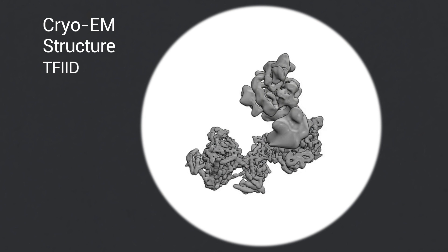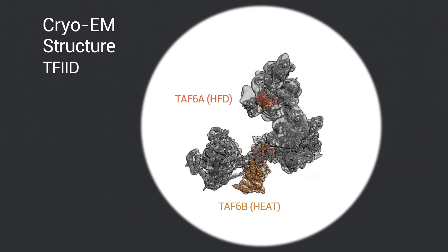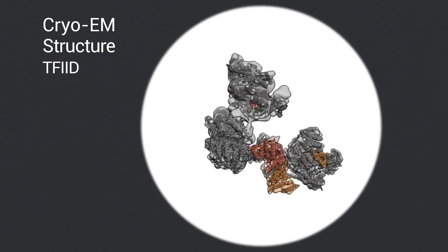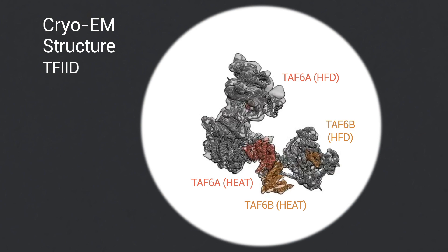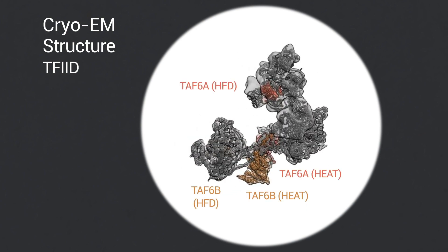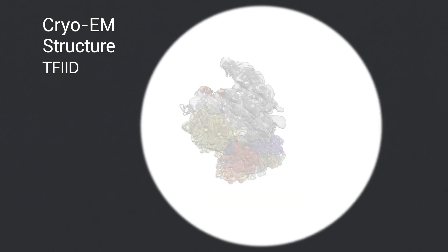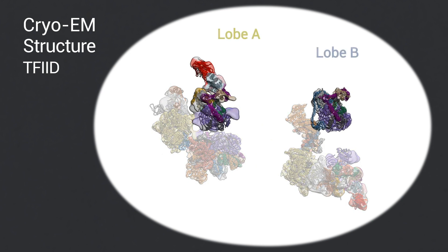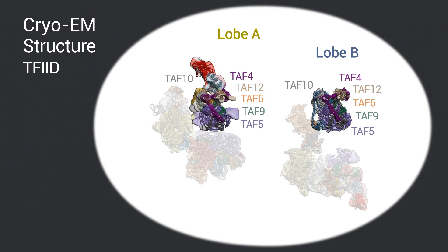We show that TF2D is built on a dimeric scaffold containing at its center a dimer of TAF-6 HEAT-repeat domains within lobe C that connects to lobes A and B through the TAF-6 histone fold domains. Lobes A and B are both organized around the WD40 domain of TAF-5 and the histone fold domains of TAF-4, 6, 9, 10, and 12, but include additional subunits that result in distinct function for each lobe.